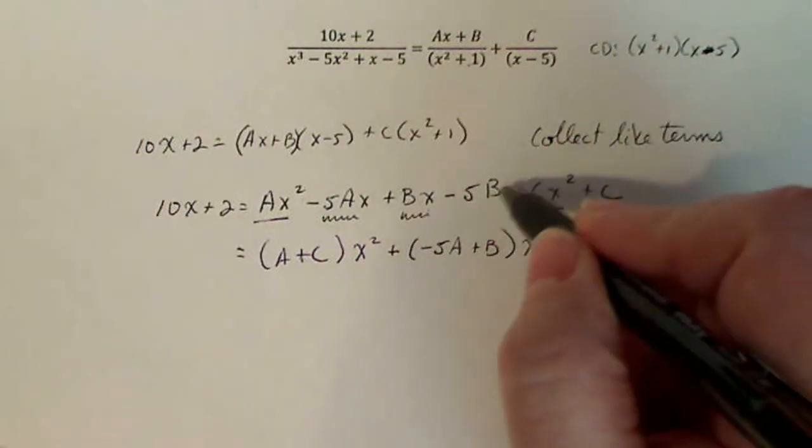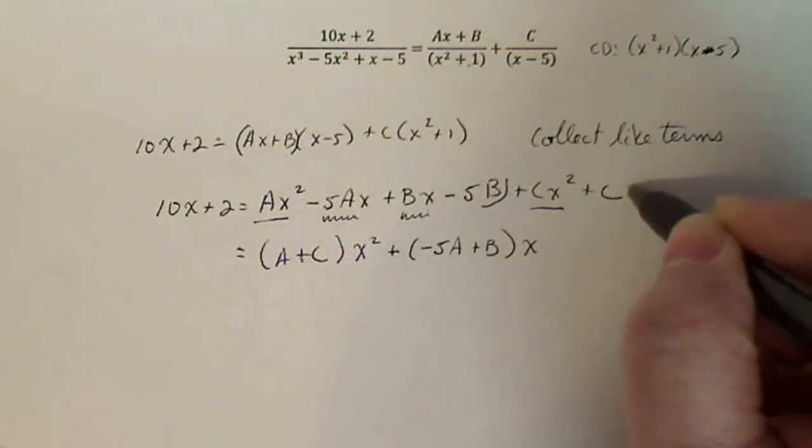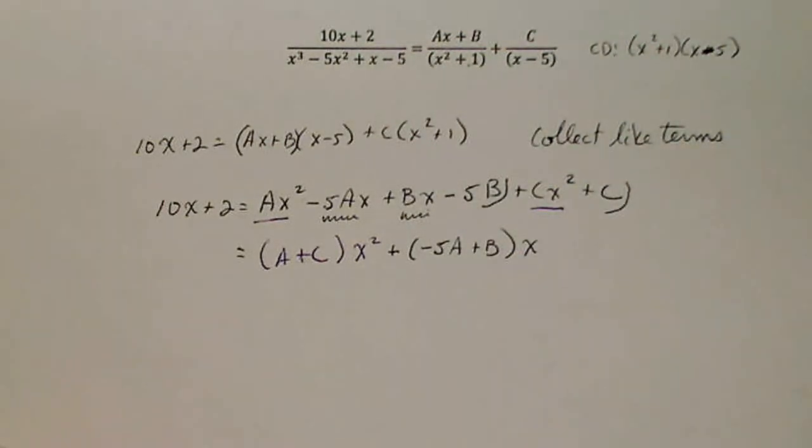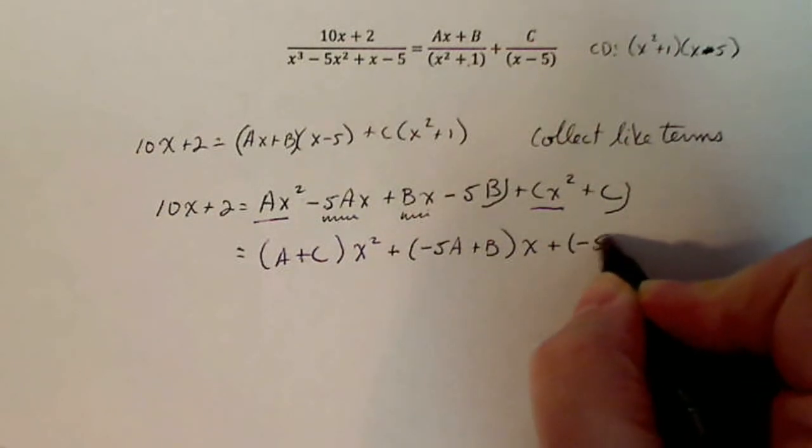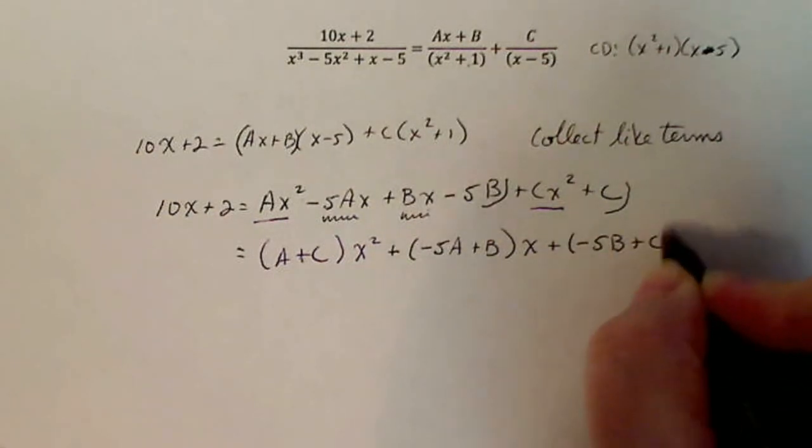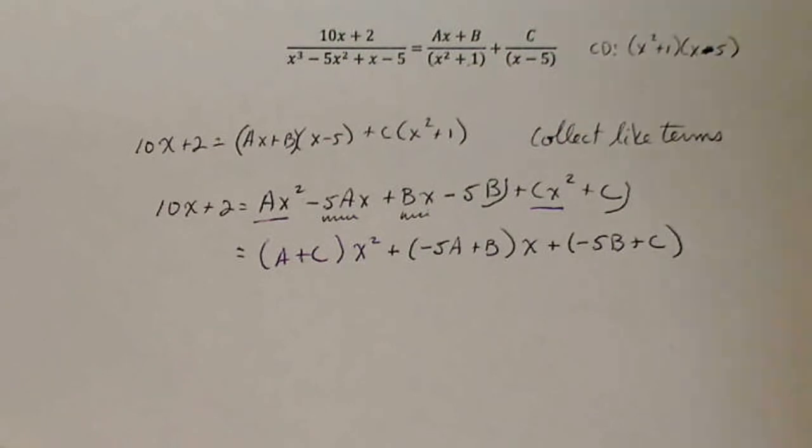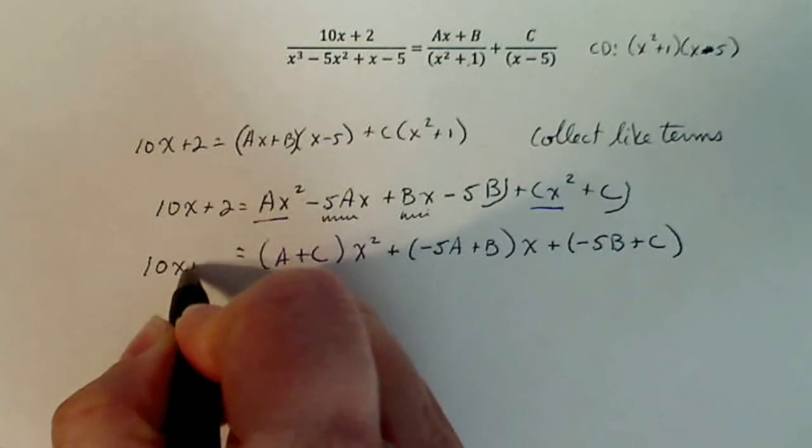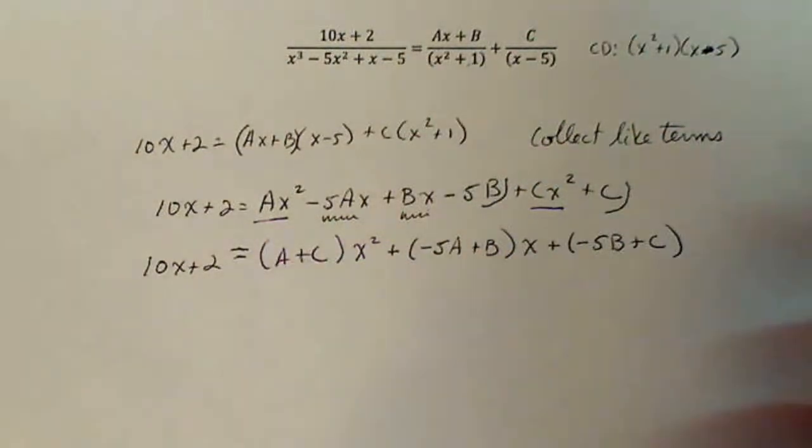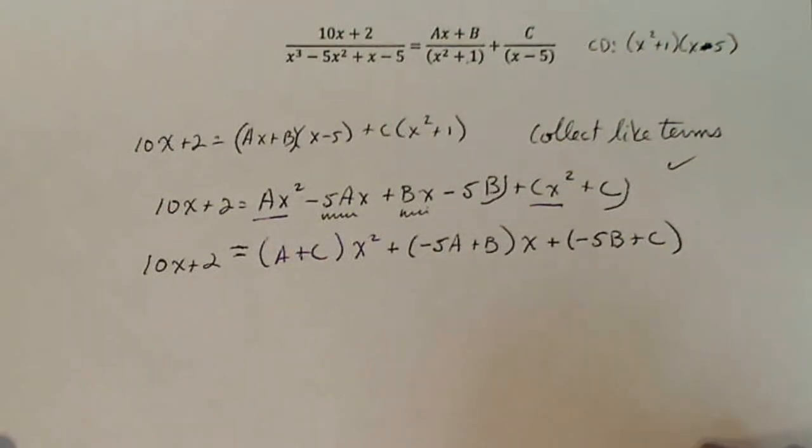And then lastly, the constant terms, there's a constant term and there's a constant term. So that's going to be plus minus five b plus c. Now I'm kind of paranoid about negative signs just like you are. So that's why I use my parentheses and I put things like that. And this side comes down here. Now I'm going to show you the next step. This is the collecting like term step that we just finished. Now let's see what we do next.